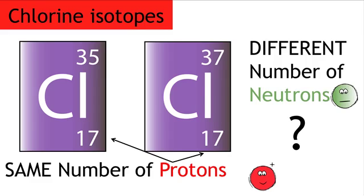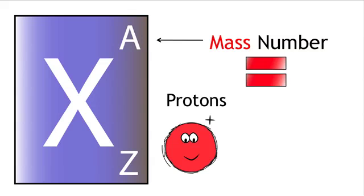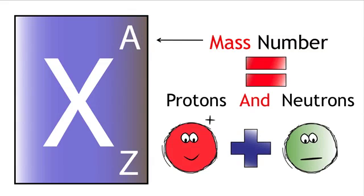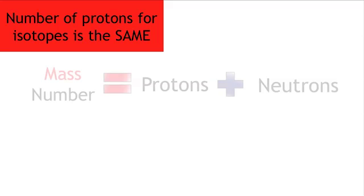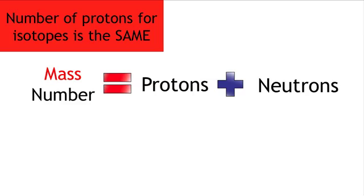So how many neutrons are in each isotope of chlorine? Remember, mass number equals number of protons plus number of neutrons. And the number of protons in each isotope is the same. Therefore, we can rearrange this formula to calculate the number of neutrons in each form.